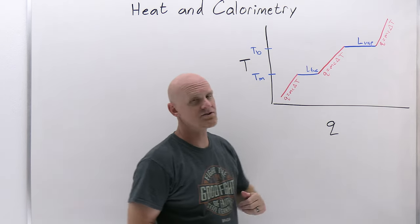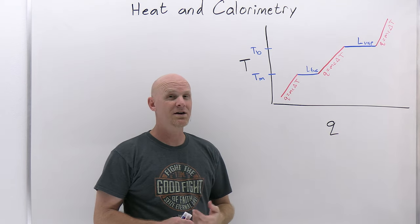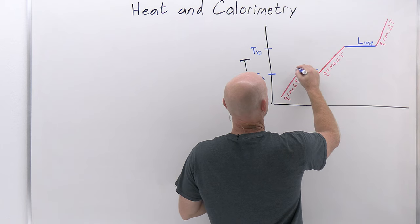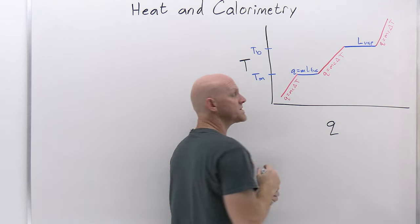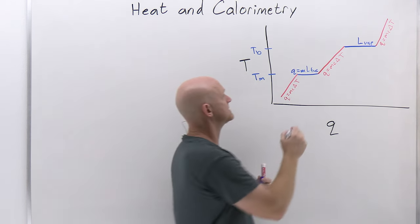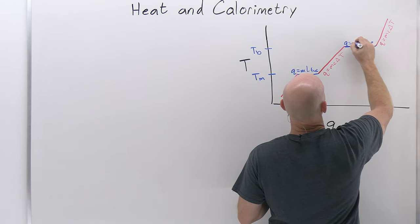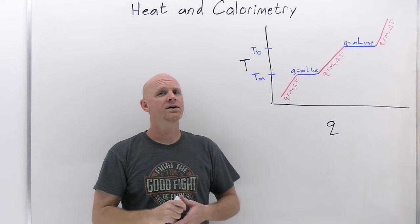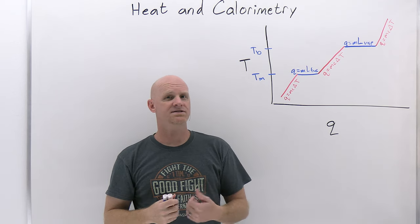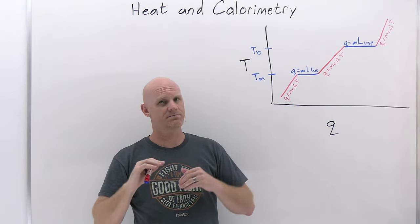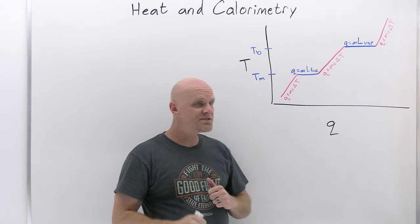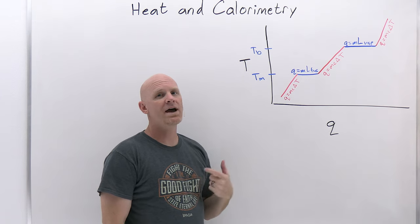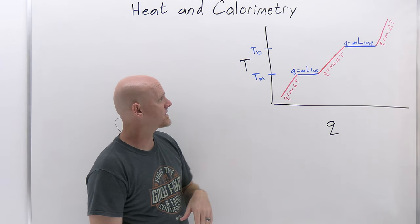The SI units for latent heats of fusion and vaporization are joules per kilogram, so to calculate Q you multiply by the mass in kilograms. When calculating heat to raise a substance from one temperature to another, you have to account for whether you're crossing any phase change temperatures.